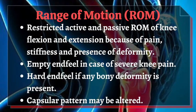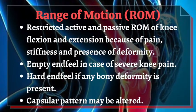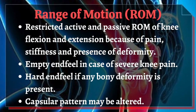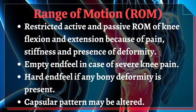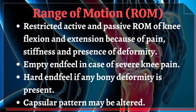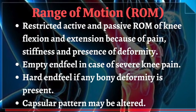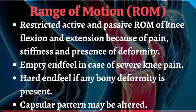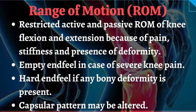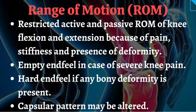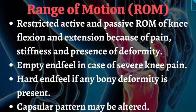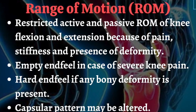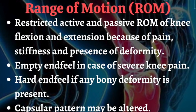The first thing in the examination part is measurement of range of motion (ROM). Restricted active and passive range of motion of knee flexion and extension is present because of pain, stiffness, and deformity. There is empty end feel in cases of severe knee pain, and hard end feel if bony deformity is present. The capsular pattern of the knee joint may be altered.